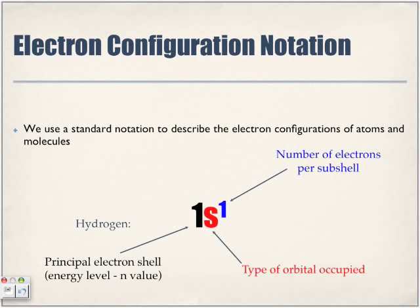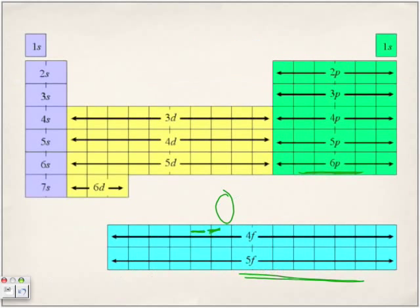Electron configuration notation uses the following format. Here we have hydrogen. The first number shown is the principal electron shell — the n value — which is the energy level it occupies: first energy level. The letter represents the orbital being occupied: is it s, p, d, or f? For hydrogen it's s. The superscript number represents the number of electrons per subshell.